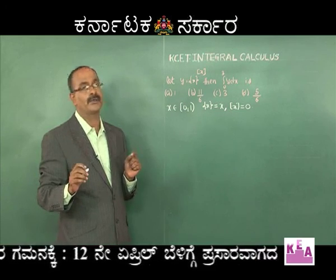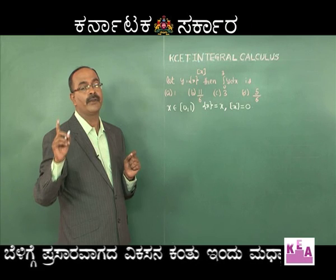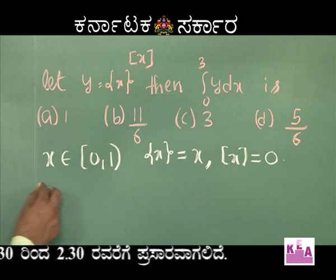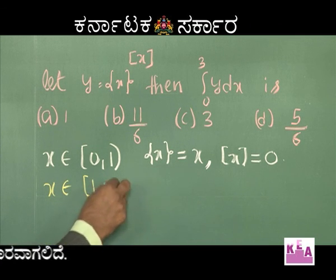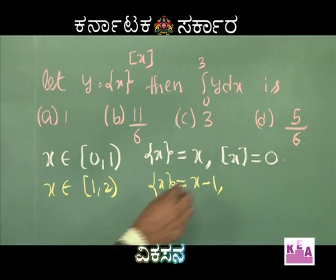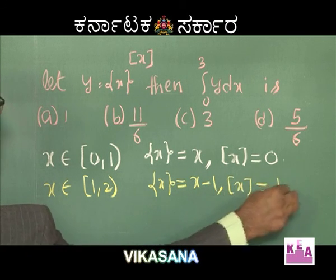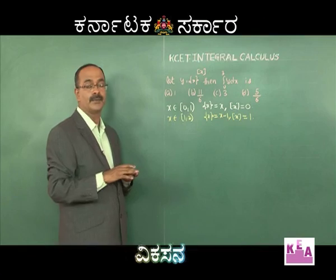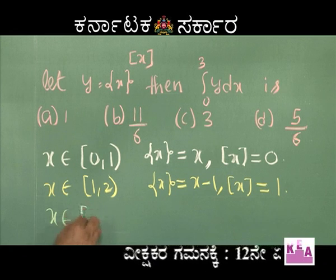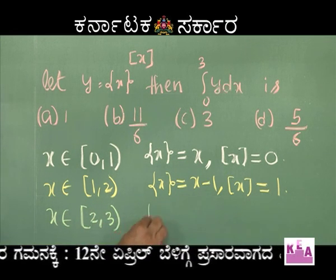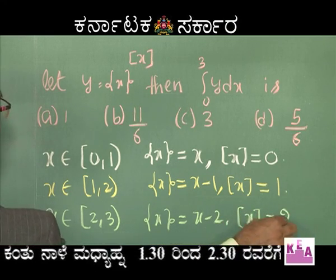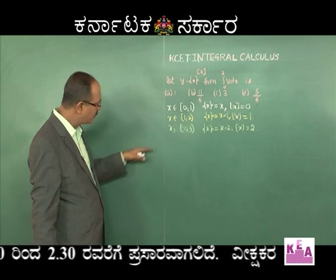When x ∈ [1, 2), the fractional part of x is x − 1 and the integral part of x is 1. When x ∈ [2, 3), the fractional part of x is x − 2 and the integral part of x is 2.